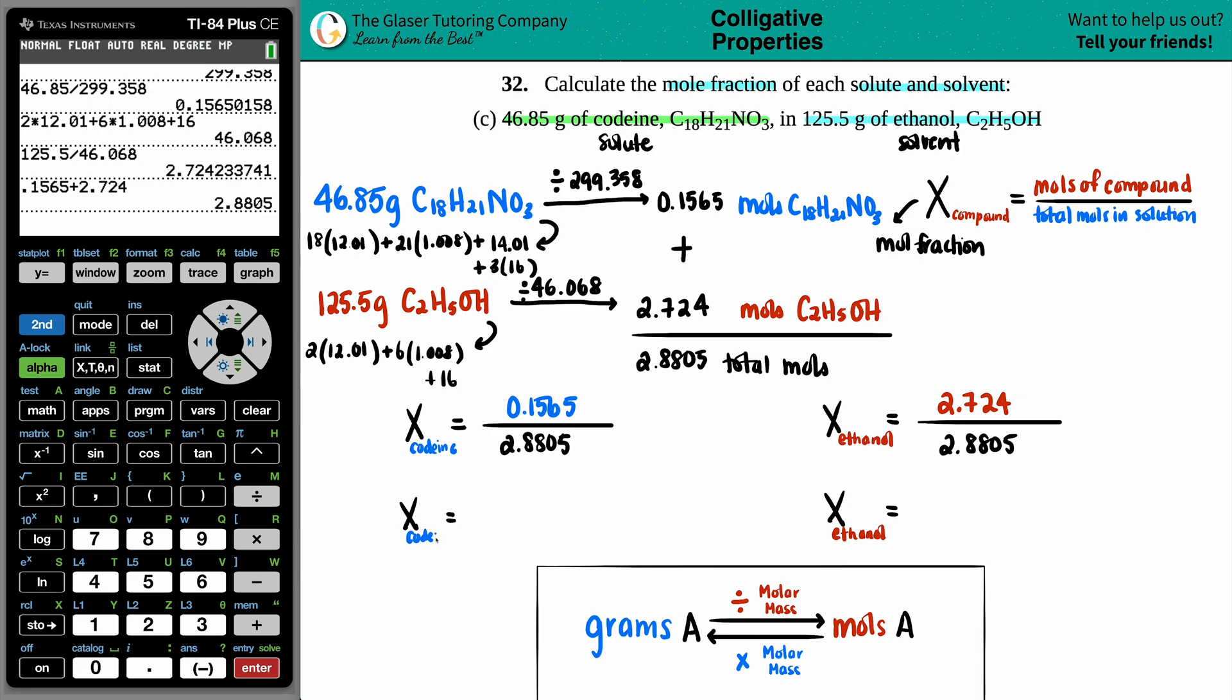Okay, codeine: 0.1565 divided by 2.8805, that looks good to me. So we get a mole fraction for codeine, it's pretty small, 0.054, and I guess I'll box that off.